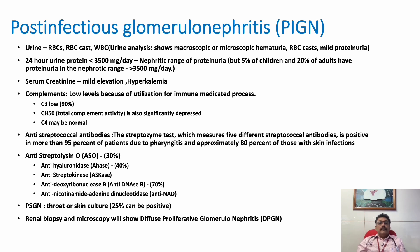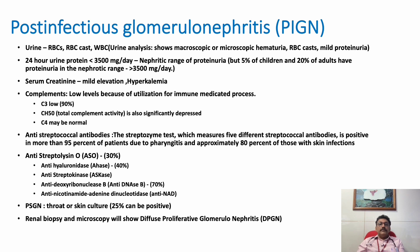Complements are very important in this type of disease. Since it is antigen-antibody-complement-mediated, complement levels are reduced. C3 is low in 90 percent, C4 may be normal, and CH50 total complement activity is also significantly depressed. Streptococcal antigens and antibodies should be examined in all patients. ASO titer is elevated in 30 percent, antihyaluronidase activity in 40 percent, anti-streptokinase activity can be elevated, anti-DNase B in 70 percent, and anti-NAD also elevated.